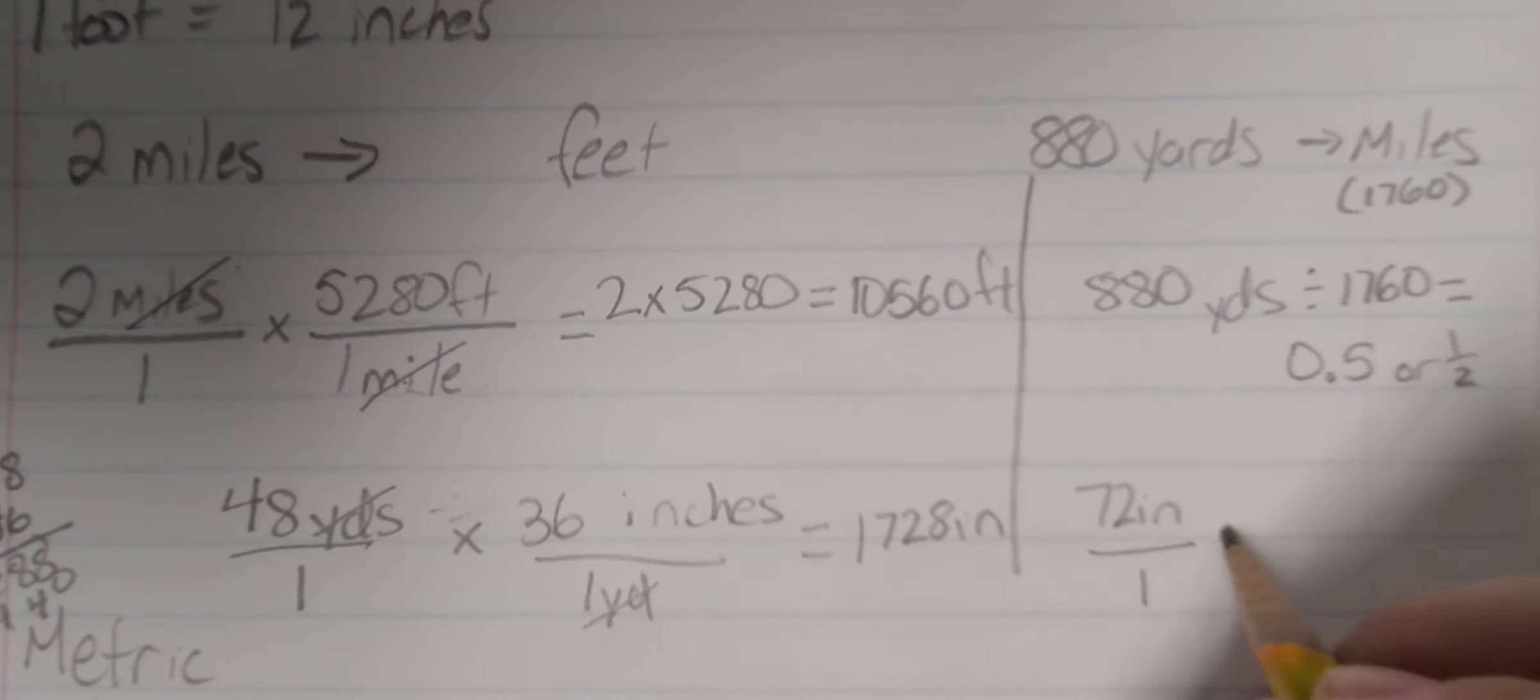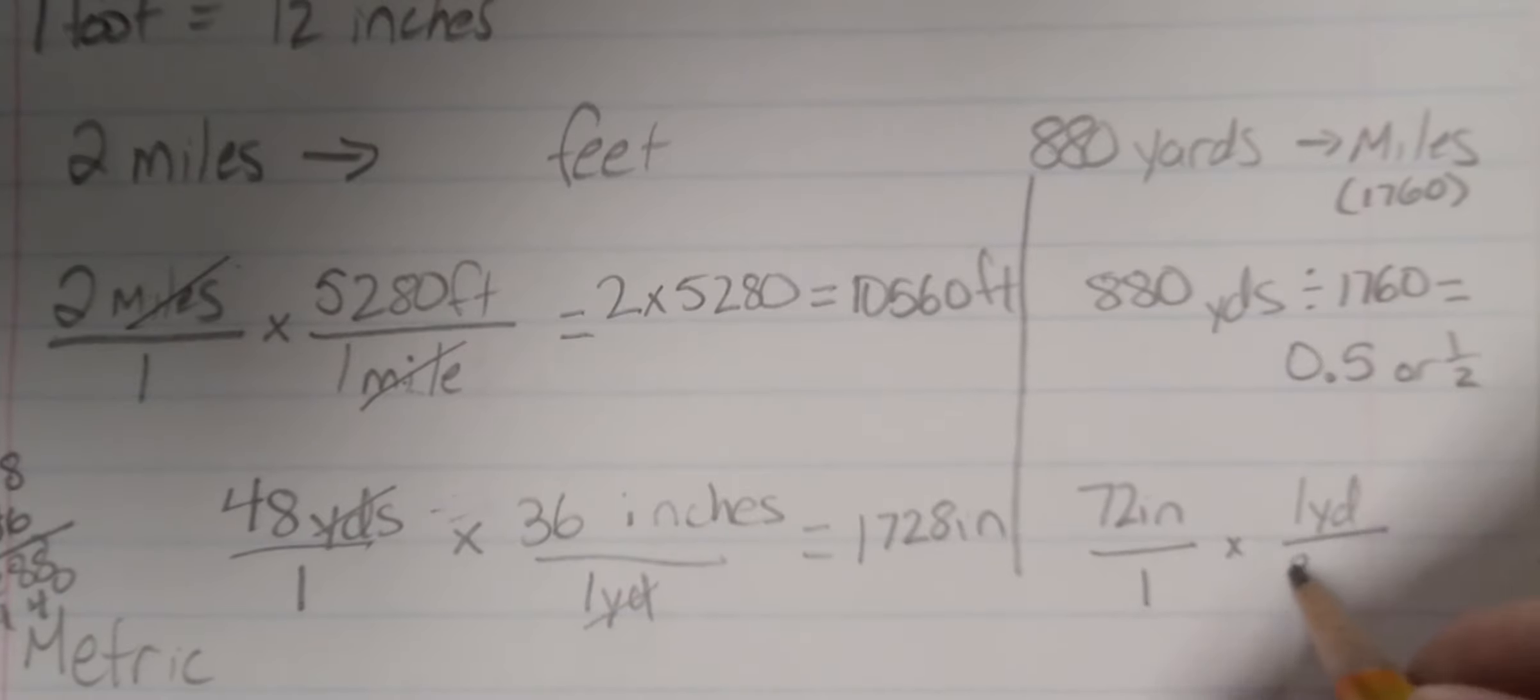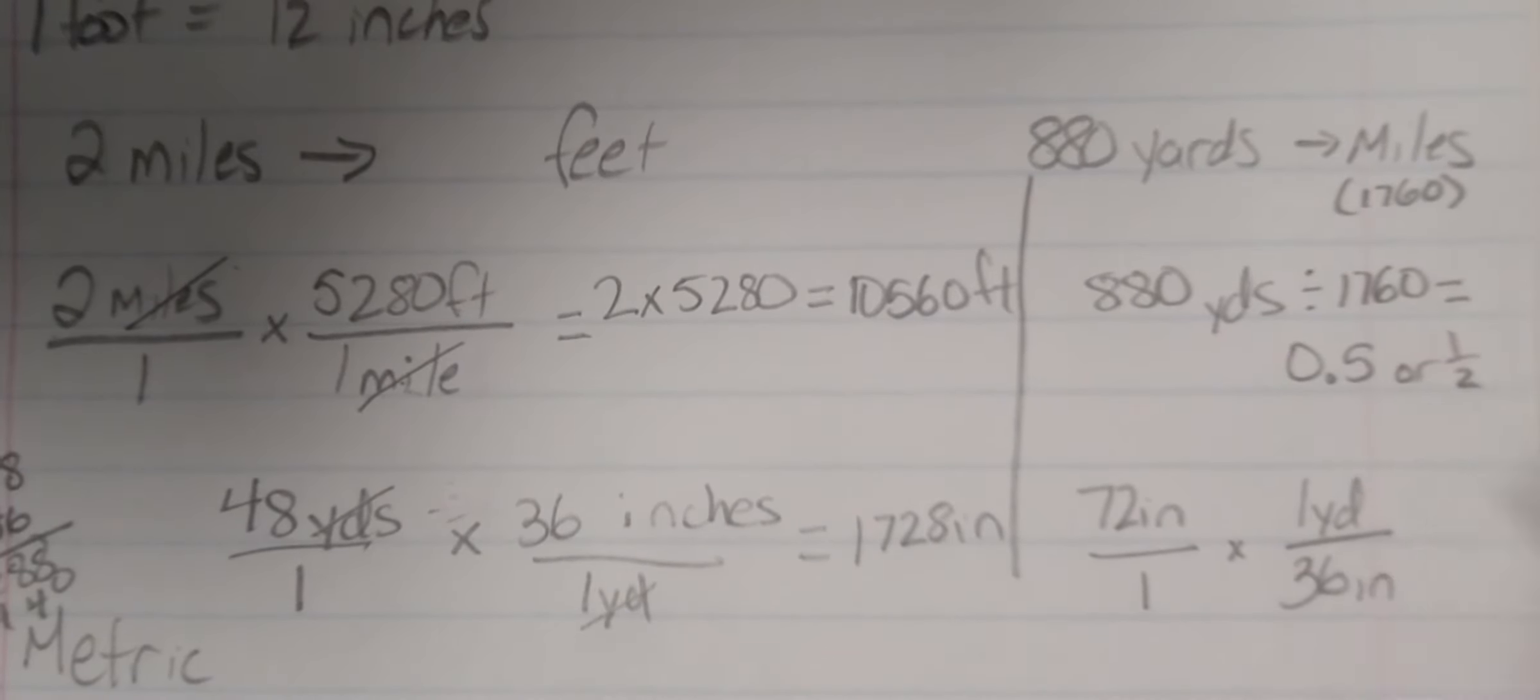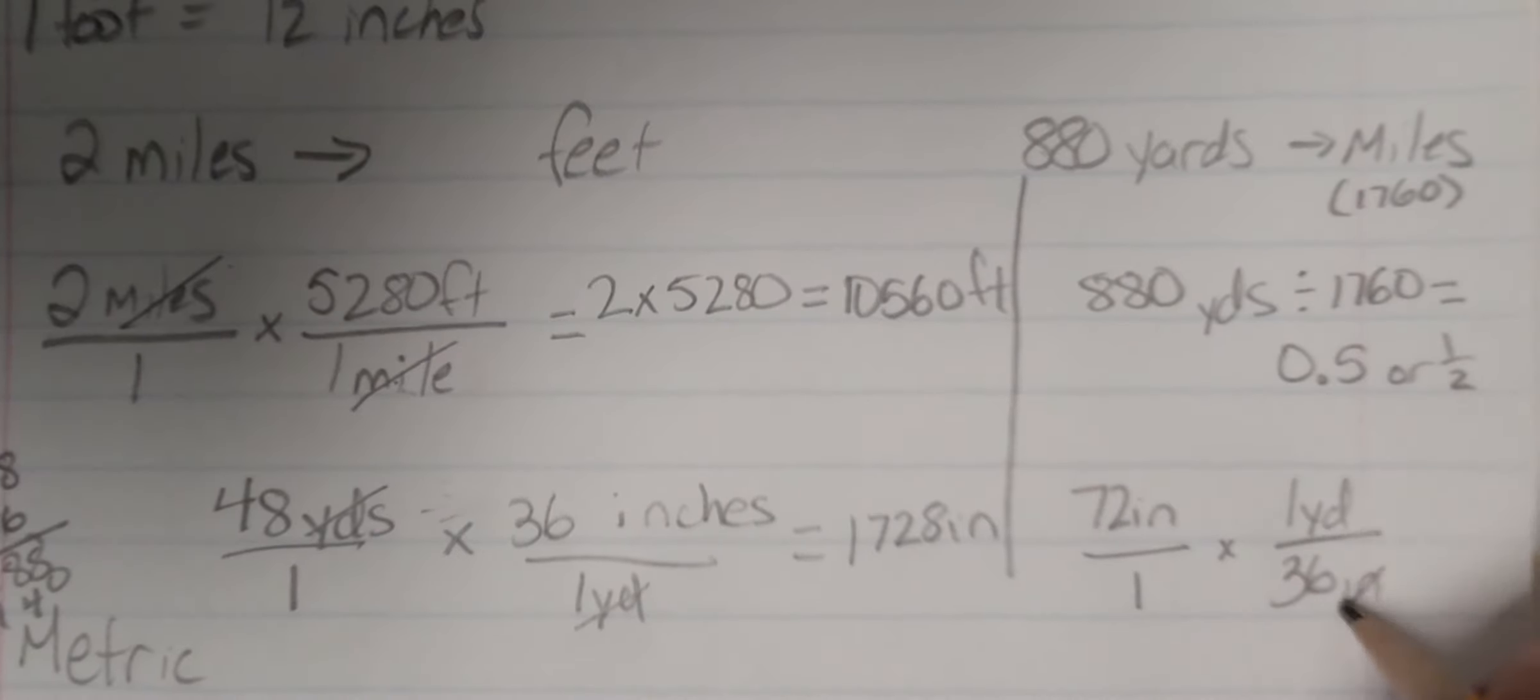So 72 over 1 times 1 yard is 36 inches. Now, the reason why it's on the bottom is I want my units that I'm trying to cancel out diagonal from each other. So I can use them to cross-cancel. Now, remember, we're multiplying. Inches cancels out.